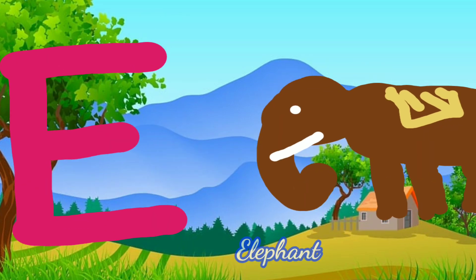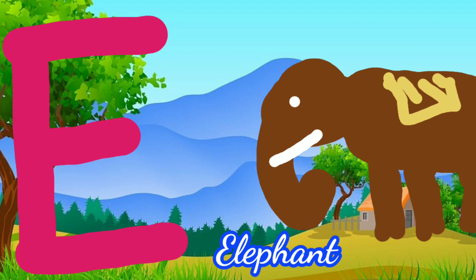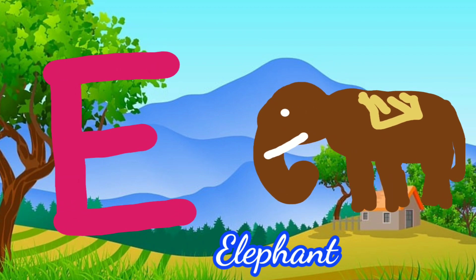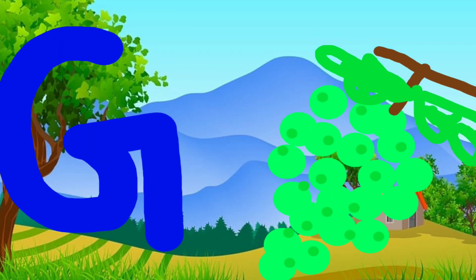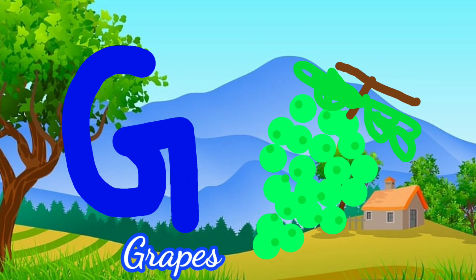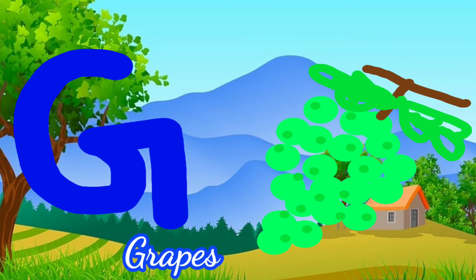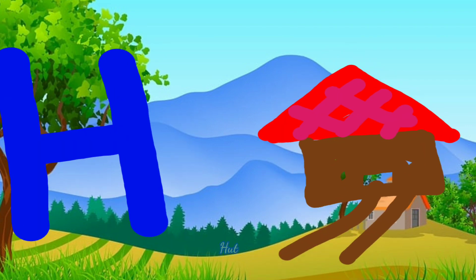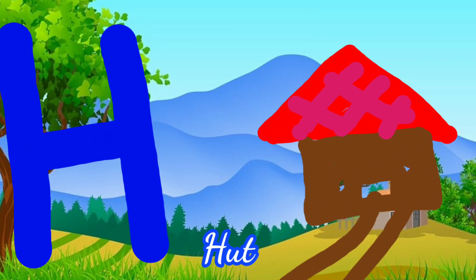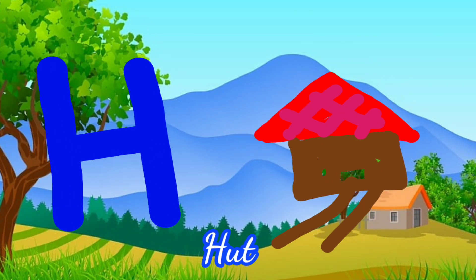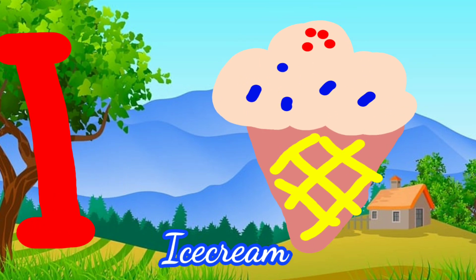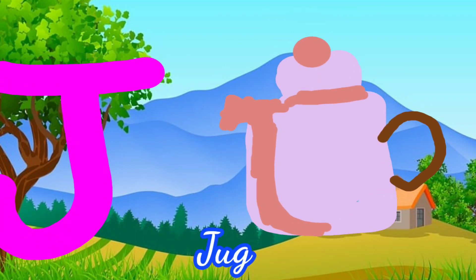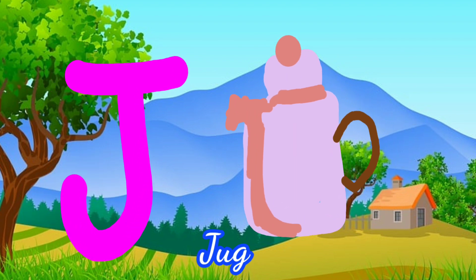E for Elephant. F for Fish. G for Grapes. H for Hut. I for Ice Cream. J for Jug.